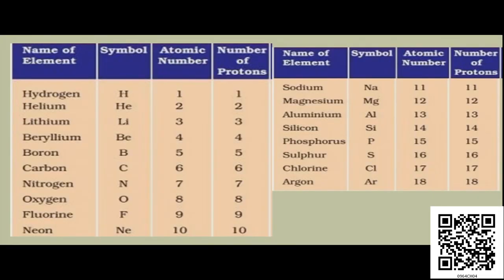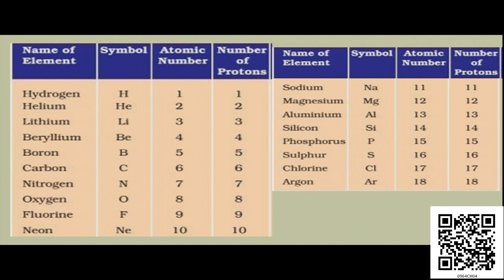We will take some examples of different elements where we will determine the atomic number. Hydrogen — symbol H, atomic number is 1, meaning the number of protons present in the nucleus is 1, and also the number of electrons will be 1 in a neutral atom of hydrogen. Similarly, helium — atomic number is 2, that means number of protons is 2. Going down the list, oxygen — atomic number is 8, so the number of protons present in the nucleus is 8. Sodium — atomic number is 11, so the number of protons is 11. Chlorine — atomic number is 17, meaning it contains 17 protons in the nucleus.